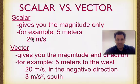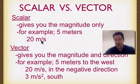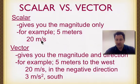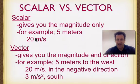Another example is speed: 20 meters per second, but we don't know which way we're going. So it doesn't include a direction, and again, this is a scalar. It just has the magnitude of the speed, or how fast we're going.